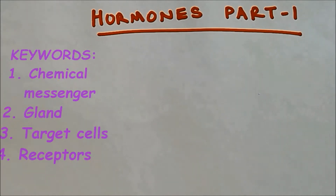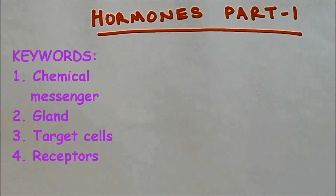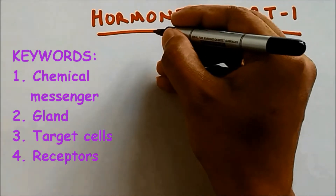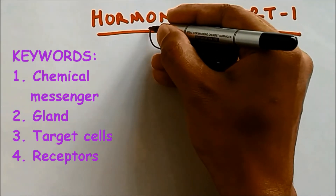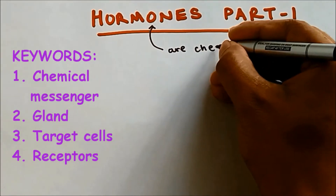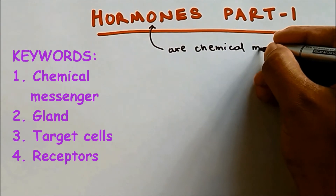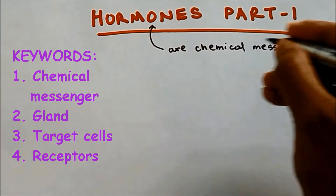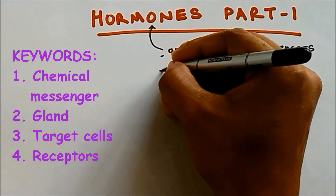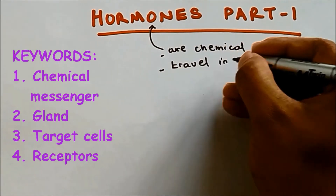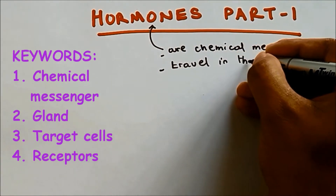Welcome to Science Tutorial For You. In today's video I'm doing hormones part one. What are hormones? Hormones are chemical messengers which travel in the bloodstream.